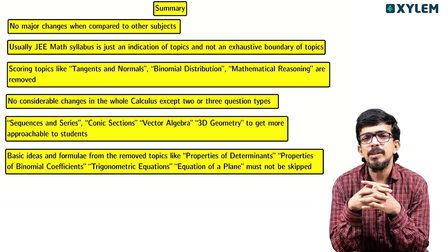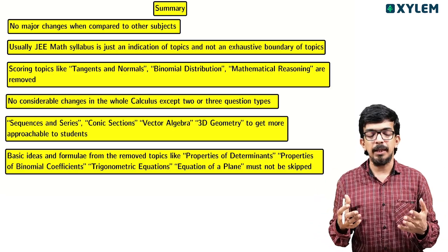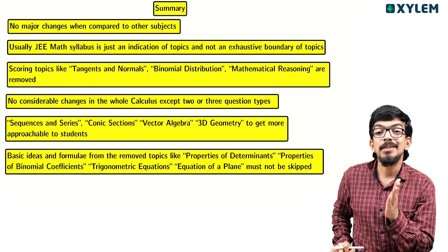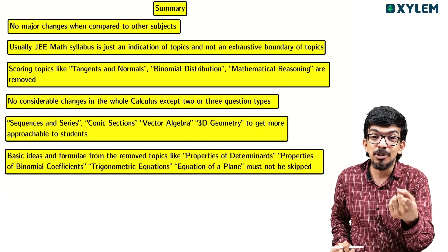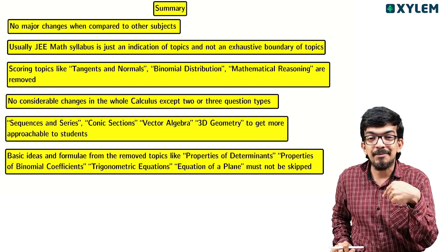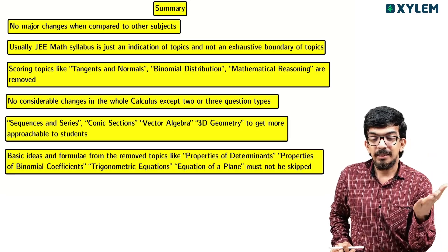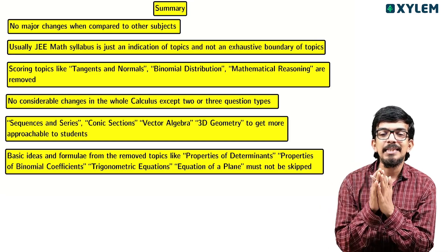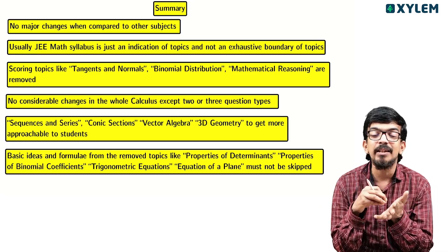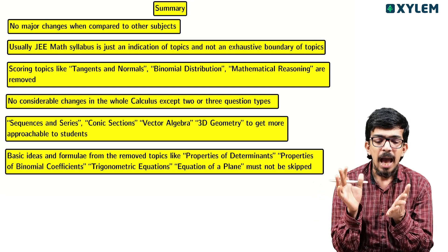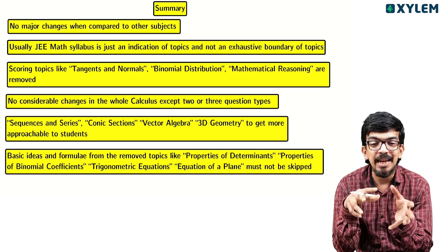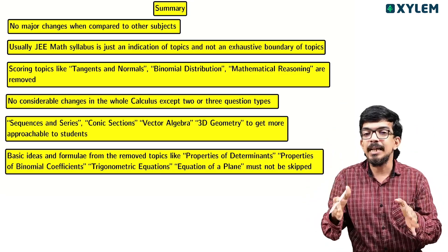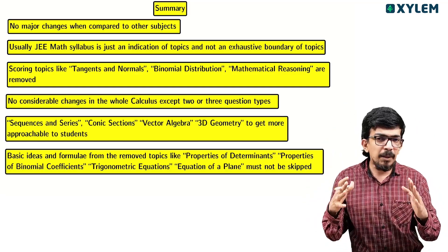If you want to approach the question paper strategically, 30 questions is possible. You might skip 10 questions and answer the remaining ones confidently. If you skip 20 questions, that reduces your score significantly. When you face questions in the exam hall, you will decide what to do based on your preparation.